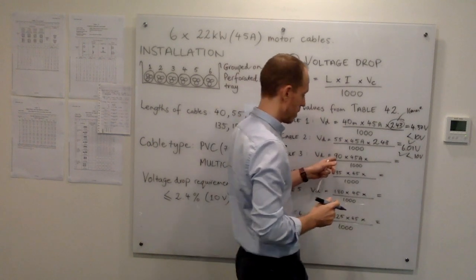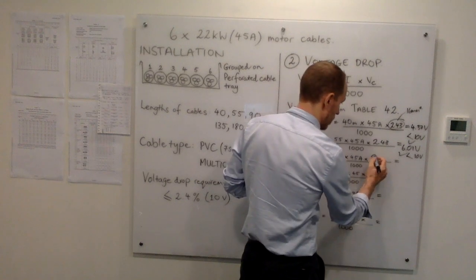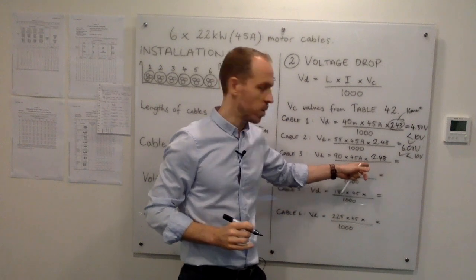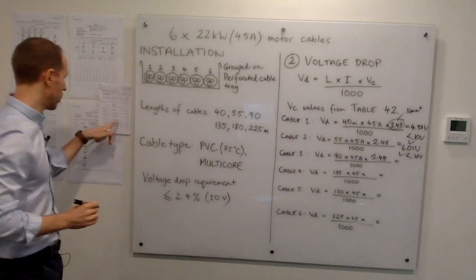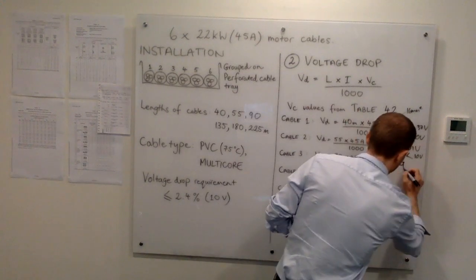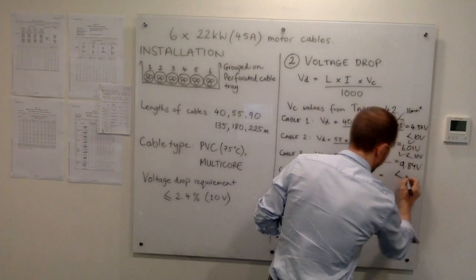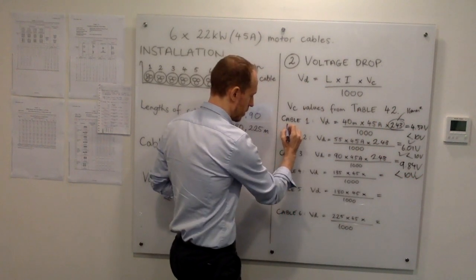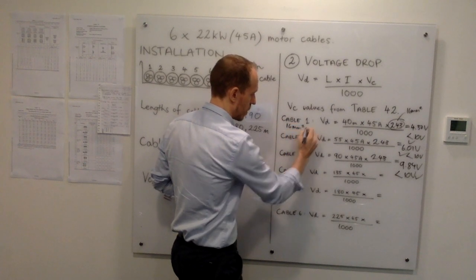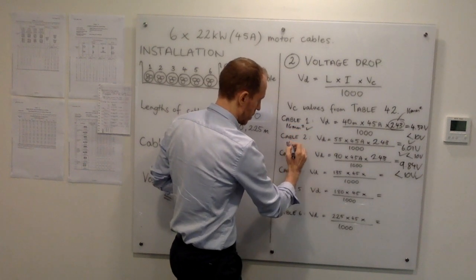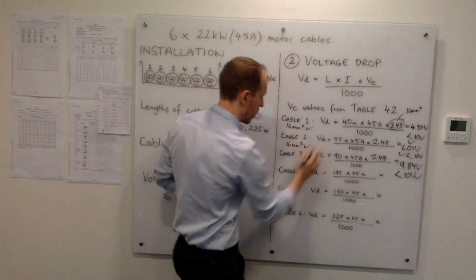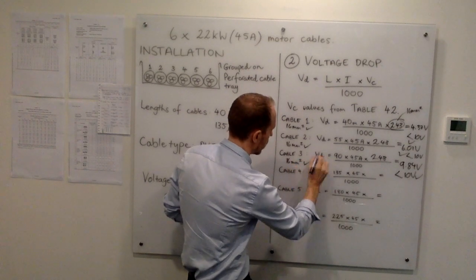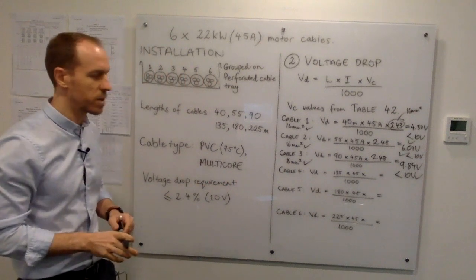Cable 3 is 90 metres at 45 amps. Using the VC value for a 16mm² cable, the voltage drop works out to be 9.84 volts, which is still less than 10 volts. So 16mm² is fine for cables 1, 2, and 3.